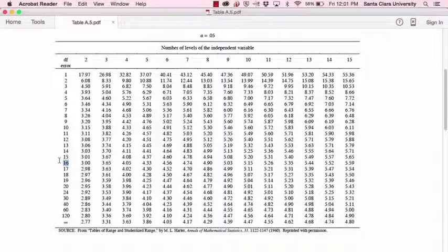So if we find the intersection of our column and our row, remember our column is four. Our row is 16. And the intersection is here, 4.05. That is the critical Tukey value.